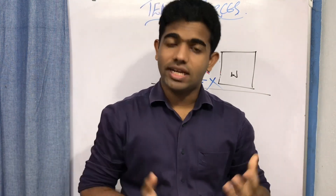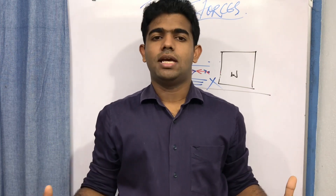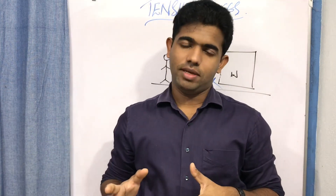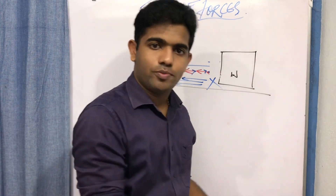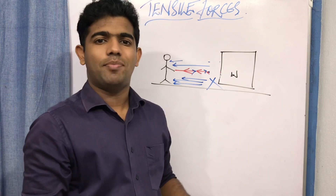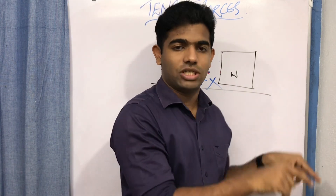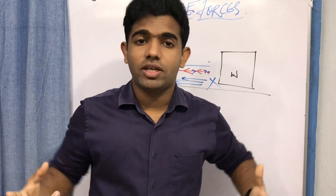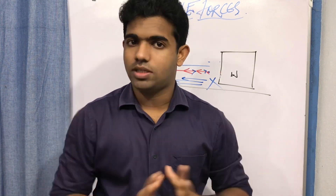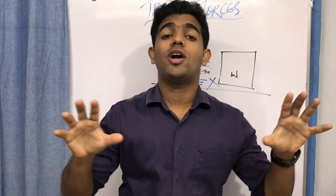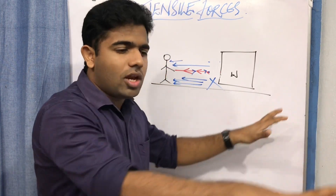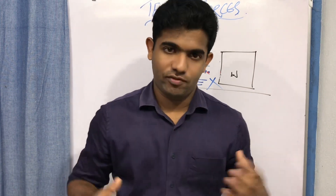When a tensile force is applied to a homologous object — for example a flexible or rigid homologous object, where homologous means the composition is the same — the tensile force is distributed throughout the long axis of that object without any difference. This means when we apply tension to a homologous object, such as a block of wood or concrete, the tensile force throughout every part of that object is equal — there is a uniform distribution.